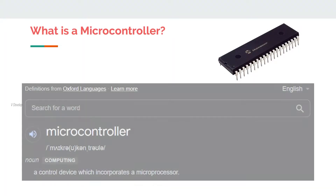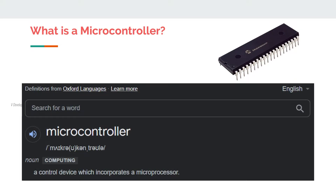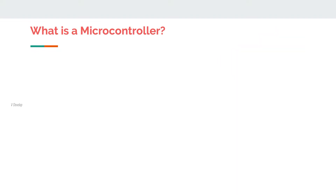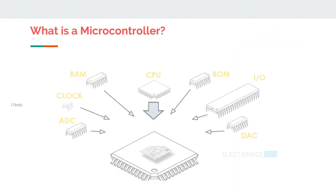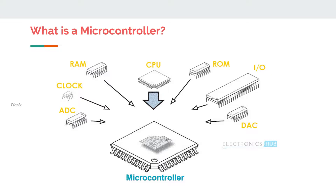According to Oxford, a microcontroller is a control device which incorporates a microprocessor. But along with the microprocessor, we also need some peripheral components. A microcontroller will have all these components and we will get to know about these in our coming videos.